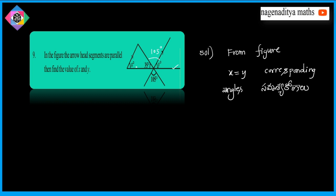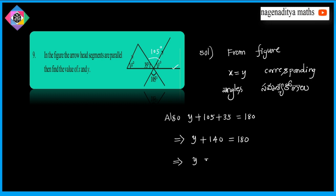Also, the sum of these angles is 180 degrees because of the straight angle. So, Y plus 105 plus 35 is equal to 180 degrees. This implies Y plus 140 is equal to 180, so Y is equal to 180 minus 140, that is 40 degrees. Since X is equal to Y, therefore X is also 40 degrees. Therefore X equals 40 and Y equals 40.